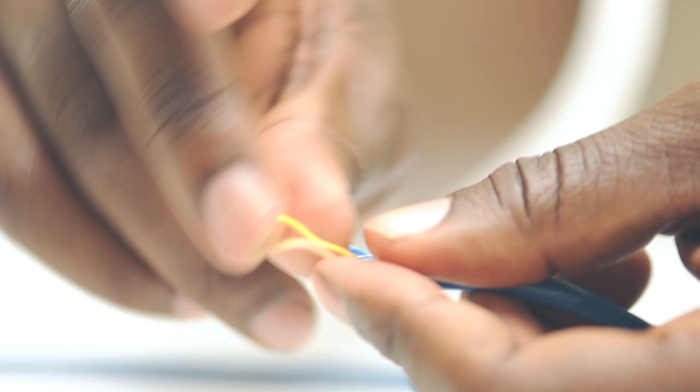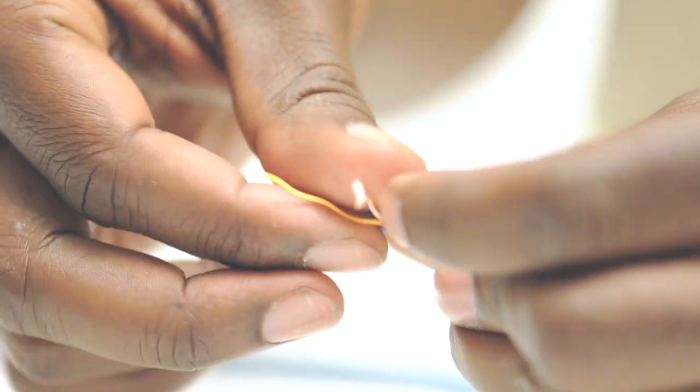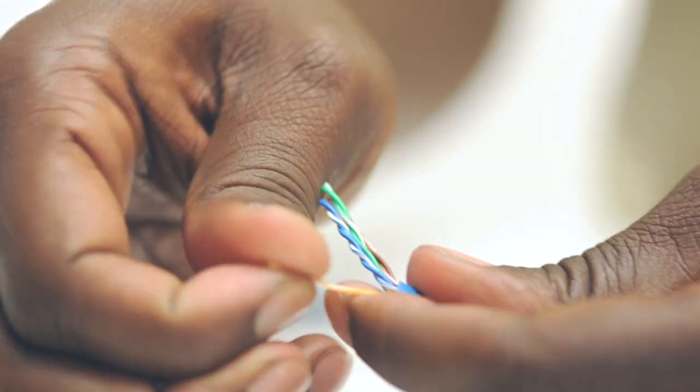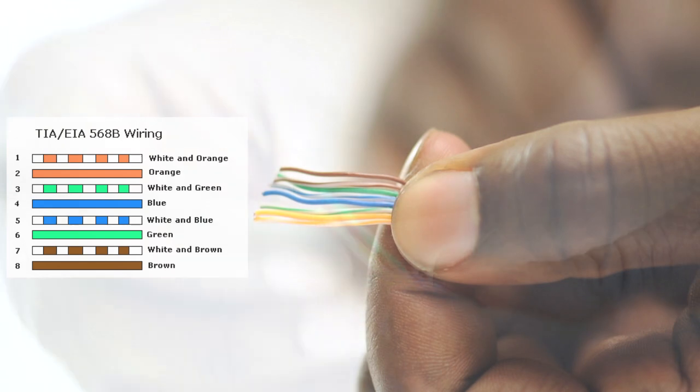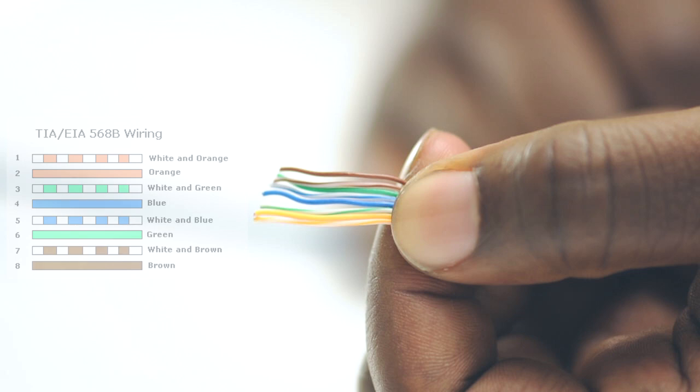I then need to untwist the pairs so I can arrange the eight conductors. Arrange the conductors according to the wiring diagram you will be using. For most standard applications use the T568B color code.